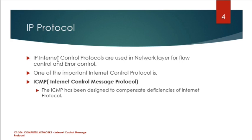IP internet control protocols are used in the network layer for flow control and error control. IP protocol provides two services: one is called flow control and the other one is error control. One of the important protocols in association with IP is ICMP — that is, Internet Control Message Protocol.